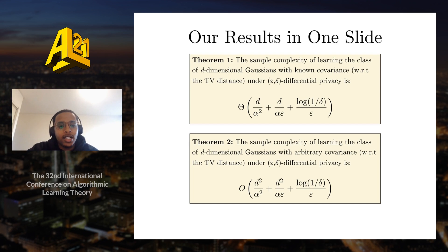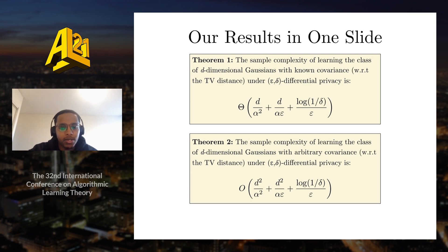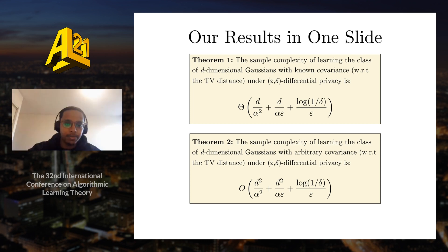In a nutshell, in our paper we prove the following two theorems stated informally. The first says that the sample complexity of learning Gaussians with known covariance matrix under ε-δ differential privacy is a certain bound, and the second says that the sample complexity of learning Gaussians with arbitrary covariance matrix under ε-δ differential privacy is another bound.